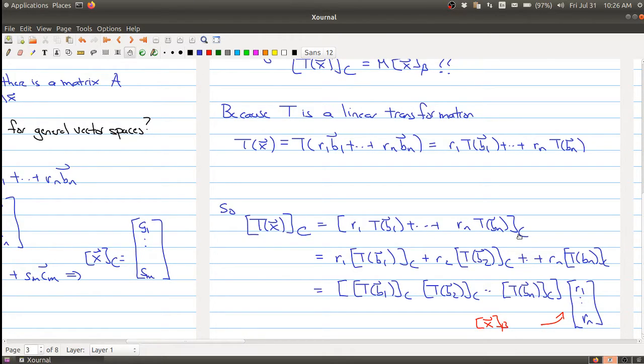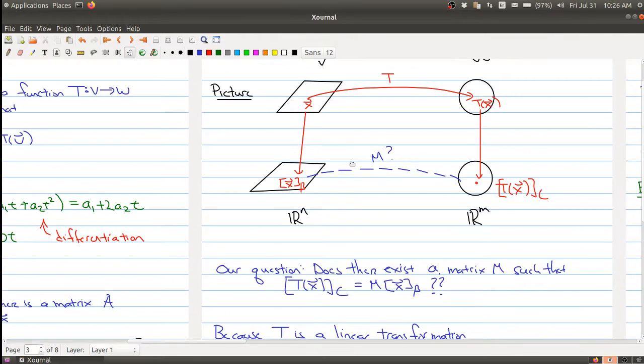Now the C coordinate, that map itself is a linear transformation. So that's why you can break it down into understanding where does this vector get sent, where each of these T(bi) get sent, and you can pull out the Ri's. And then you can rewrite this in terms of a matrix times the R1 through Rn.